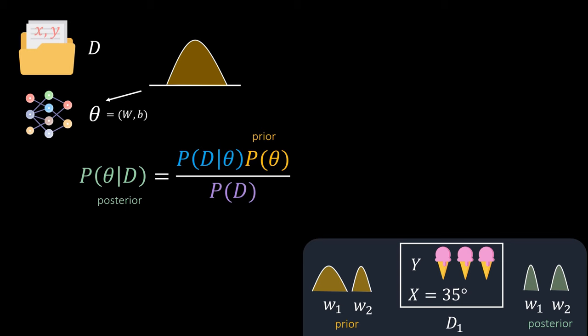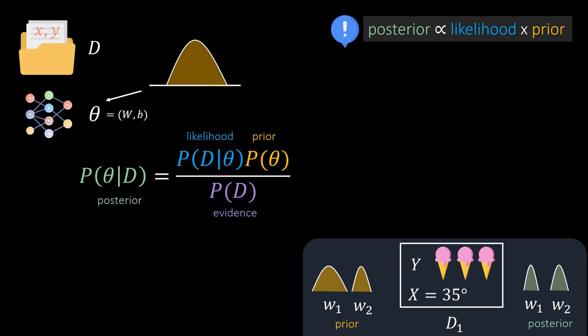According to Bayes' rule we can calculate this posterior by multiplying the likelihood with the prior divided by the evidence. Let's ignore the purple term for a second and only focus on this connection. The posterior is proportional to the likelihood times the prior. If you've watched the last part you should be familiar with the likelihood which is the blue term here. It tells us how likely some data is given our predictions.